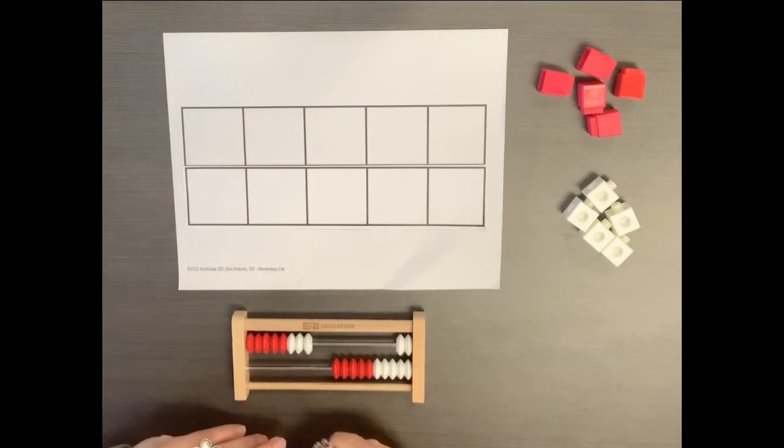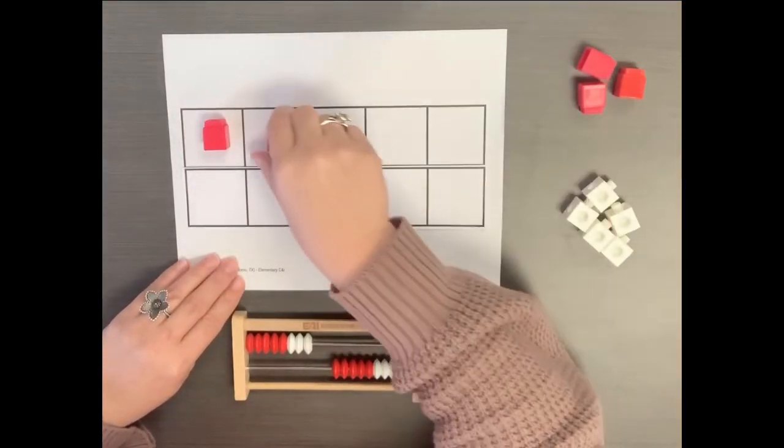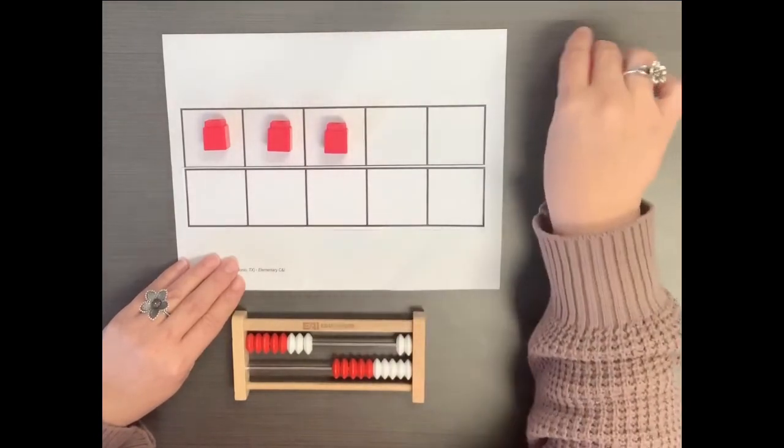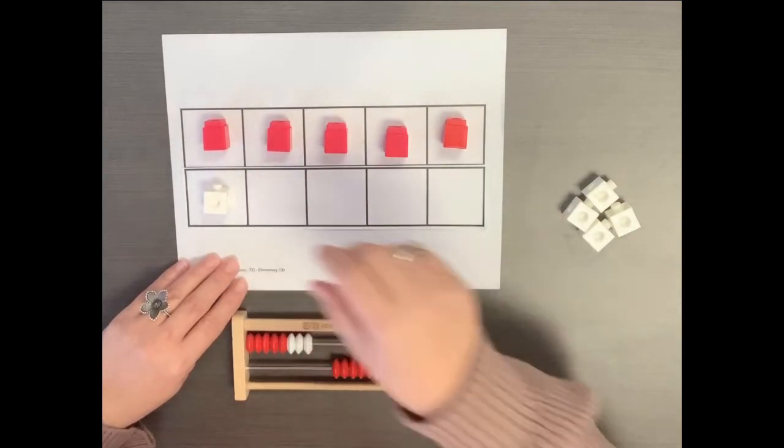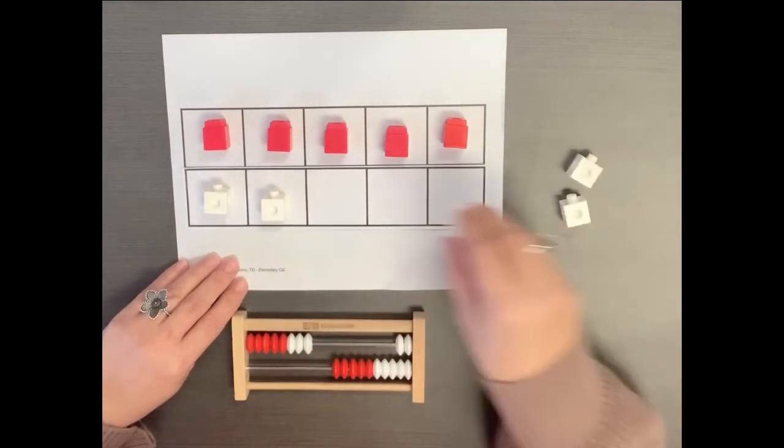When students model a quantity such as 8 on the 10 frame, fill up 5 spaces in the first row and then count on: 6, 7, 8.